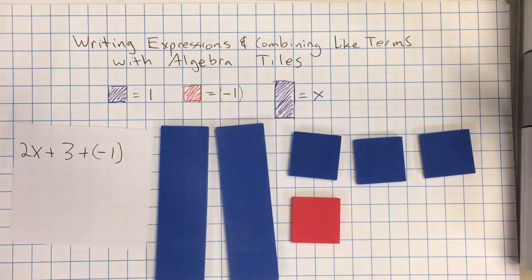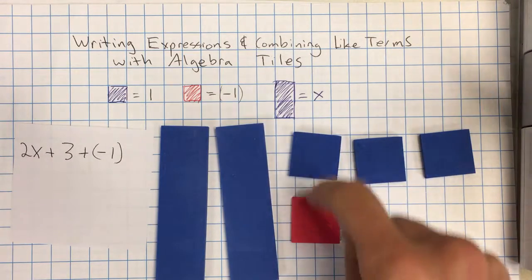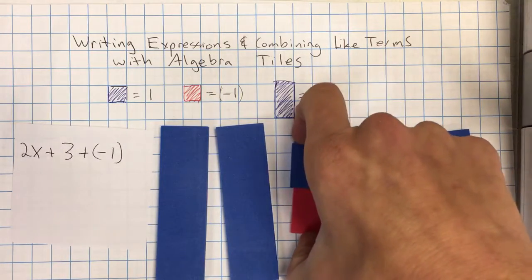And then I'm also going to add a negative 1. Now remember, if you ever see a pair that's a positive 1 and a negative 1 together, those cancel each other out. So I can actually just take those away.